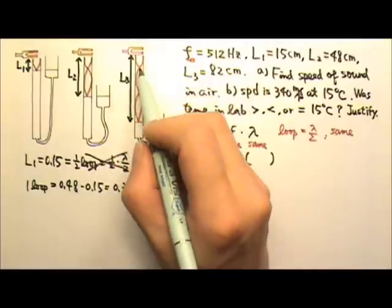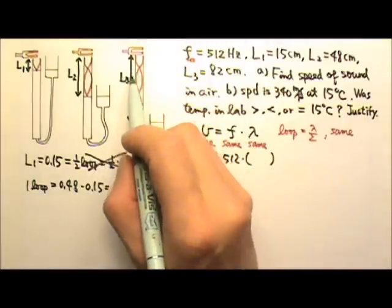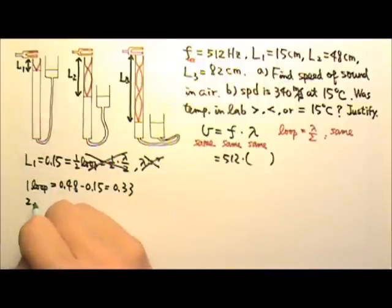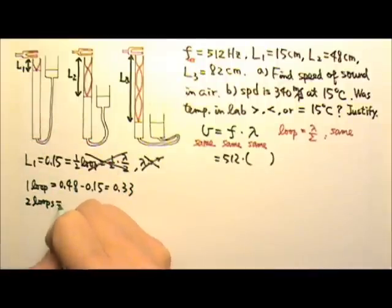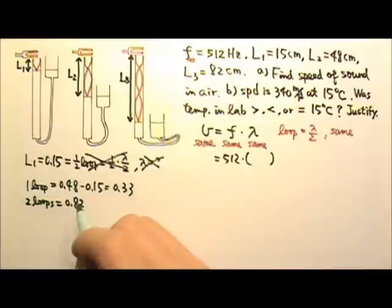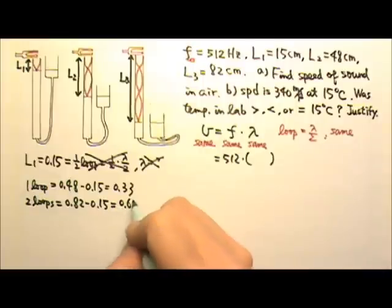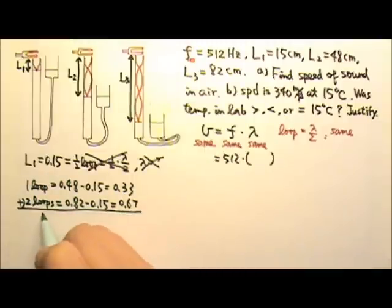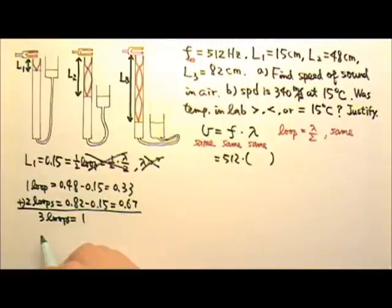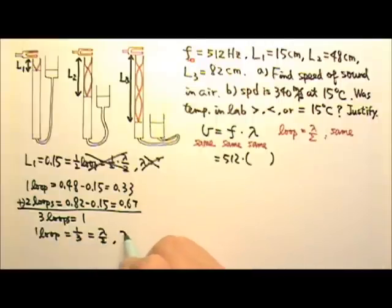And from L3, we can find the length of two loops if we just use L3 minus L1. So the length of two loops equals 0.82 minus 0.15, which is 0.67. And then I can take average. So I can add these two together. That means I get three loops equals to 1. So the length of one loop is one third of a meter. And one loop is always half a wavelength. That means the wavelength must be two thirds of a meter.